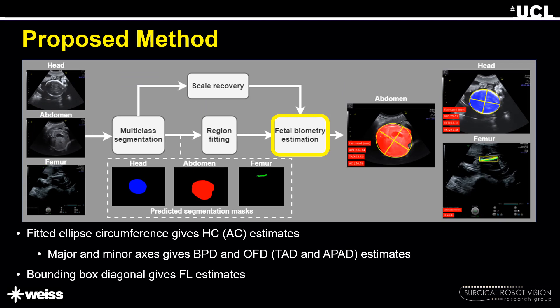The obtained scaling ratio is multiplied with the pixel measurement to get estimates in millimeter units. The complete AutoFB framework is shown in this image. The fitted ellipse circumference in the head and abdominal planes gives the estimate for head and abdominal circumferences, while the major and minor axes give estimates for the remaining measurements. For the femur, the diagonal of the bounding box gives the estimate for femur length.